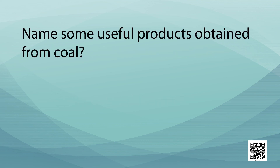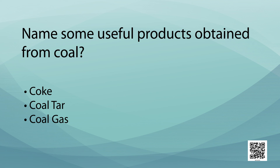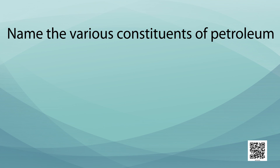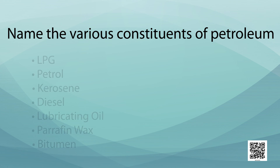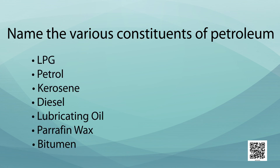Name some useful products obtained from coal. Some of the useful products obtained from coal are coke, coal tar and coal gas. And the last question: name the various constituents of petroleum. The correct answer is that the various constituents of petroleum are LPG, petrol, kerosene, diesel, lubricating oil, paraffin wax and bitumen.